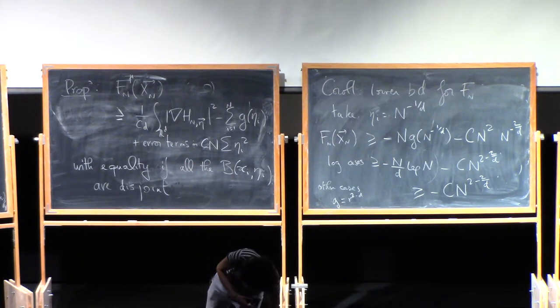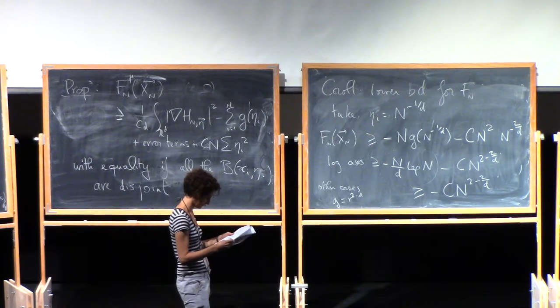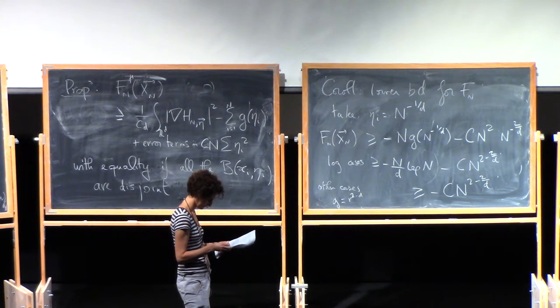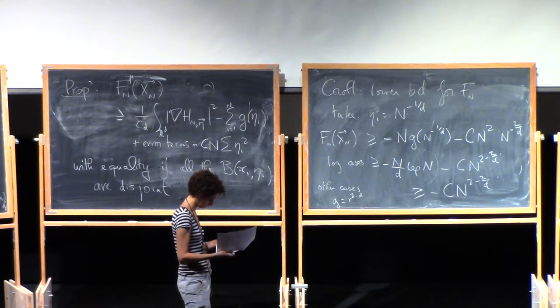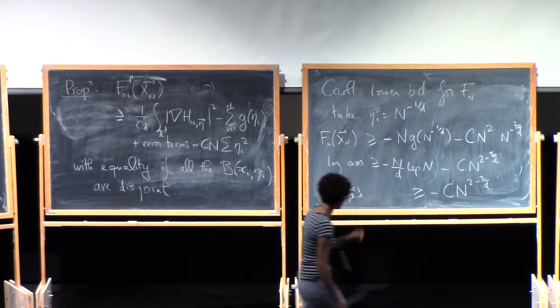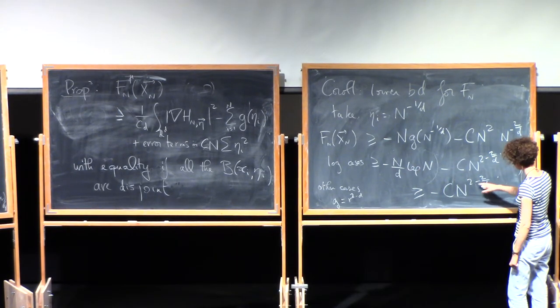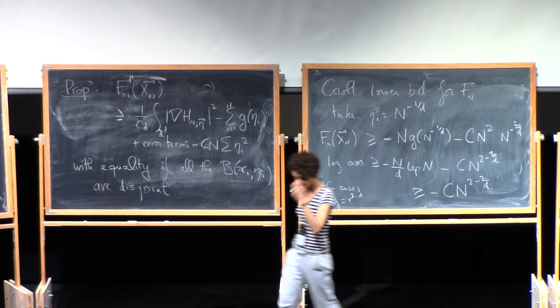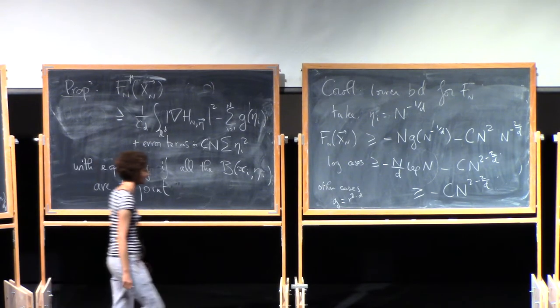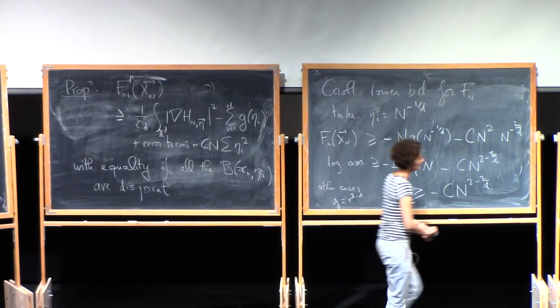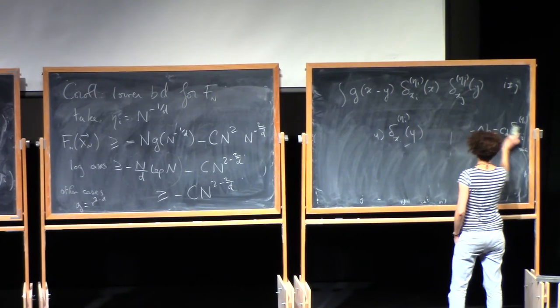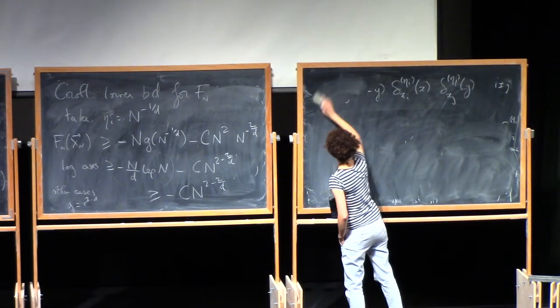And so now let's compute what this is. So you have to distinguish two cases. In the log cases then g is minus log, right? So what you find here, and I have a... Sorry, there is a plus. It's a plus? No, it's a minus. g is minus log so it's a plus and then there's a minus so I get minus n over d log n minus c n to the 2 minus 2 over d. This is good. And then in the other cases...